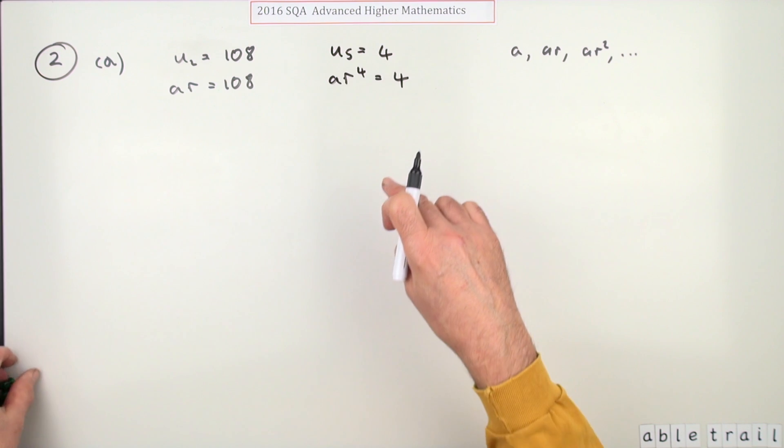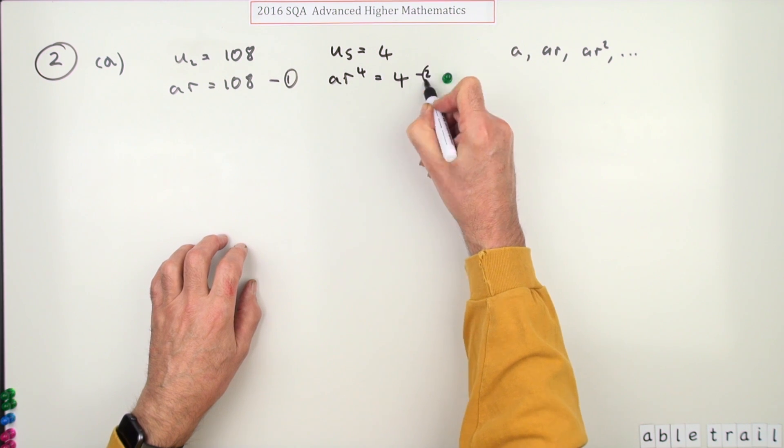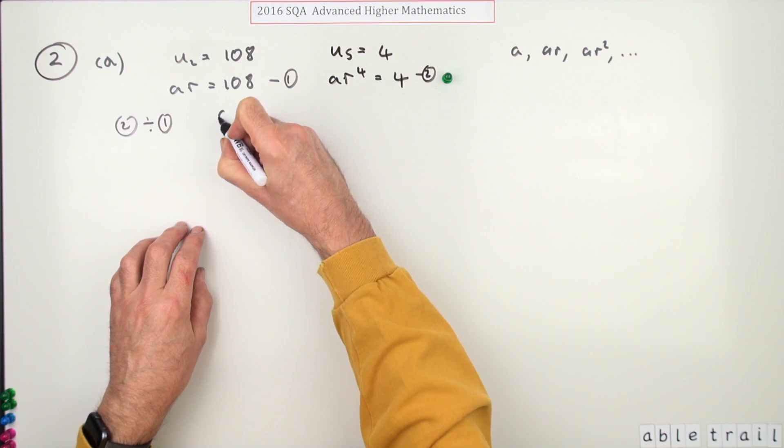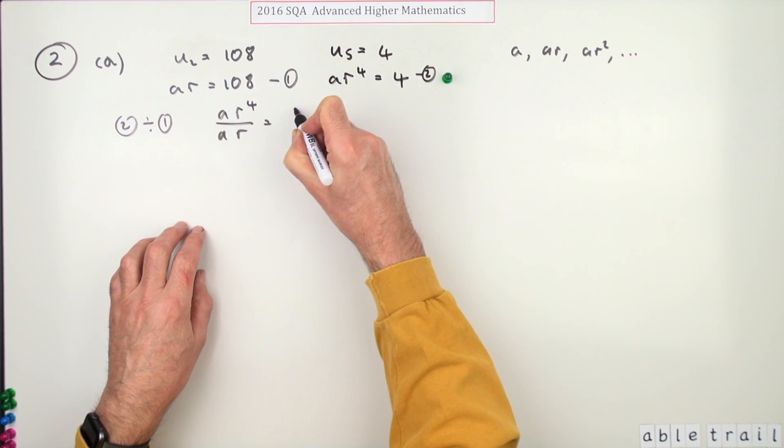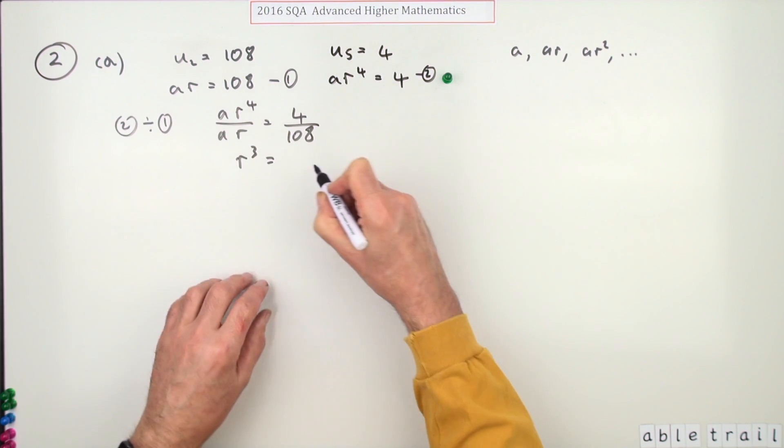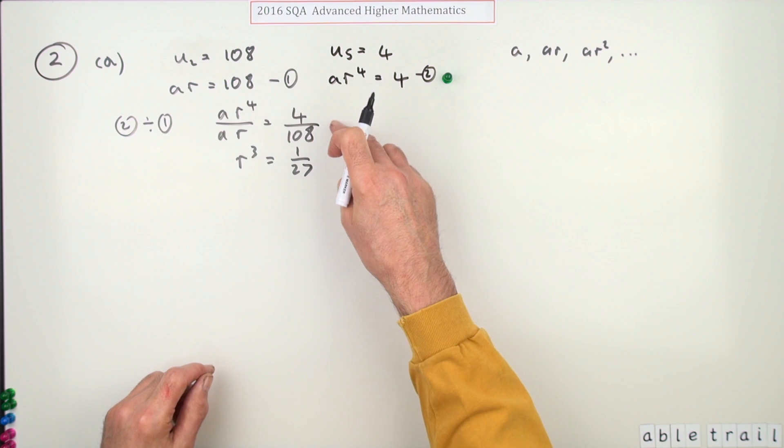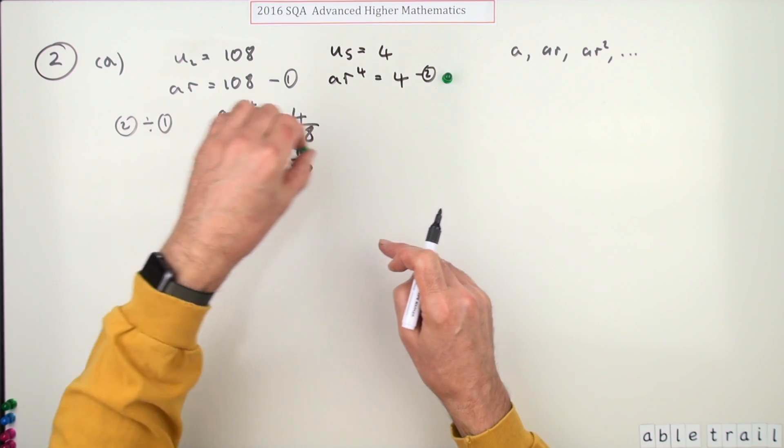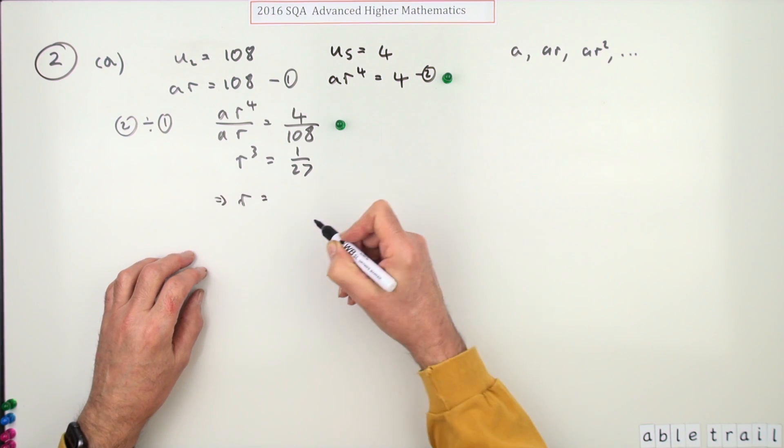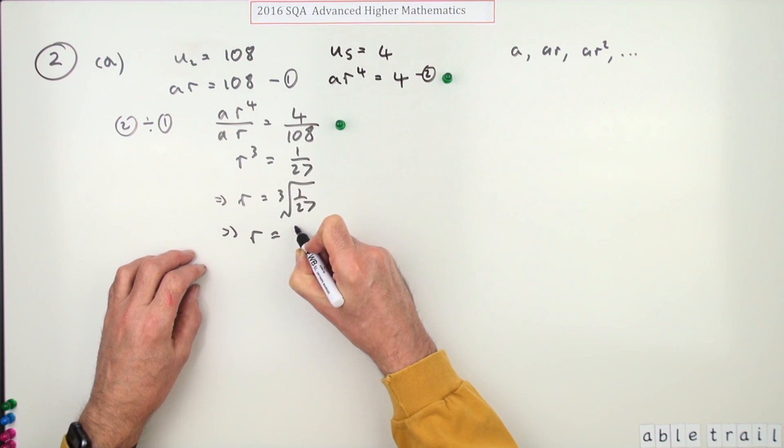Now stating that gives you the first mark. So how will you get to R? Well you've got a pair of simultaneous equations, I'll just call them one and two. So if you do two divided by one, you will have AR to the four over AR is four over 108, which means R cubed, since everything cancels the areas, and that'll cancel down as well, that goes in 27. And straight away that technique of solving the pair of simultaneous equations just by dividing gives you the next mark, gives you the mark here just from dividing it, and then finally the answer. Well that means R is going to be the cube root, which you can state or just give the answer two. So that means that R is going to be one third.